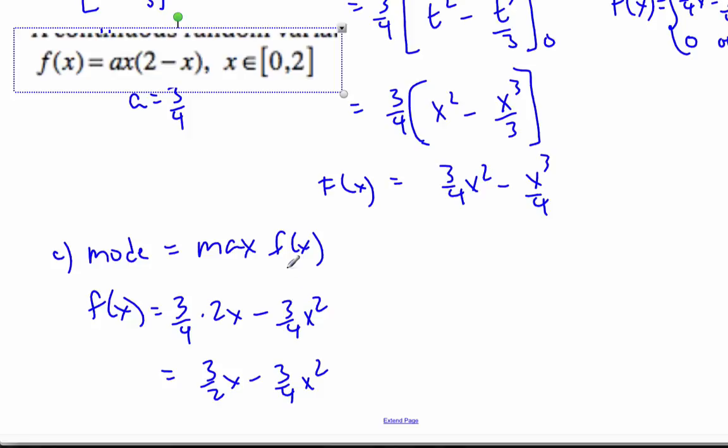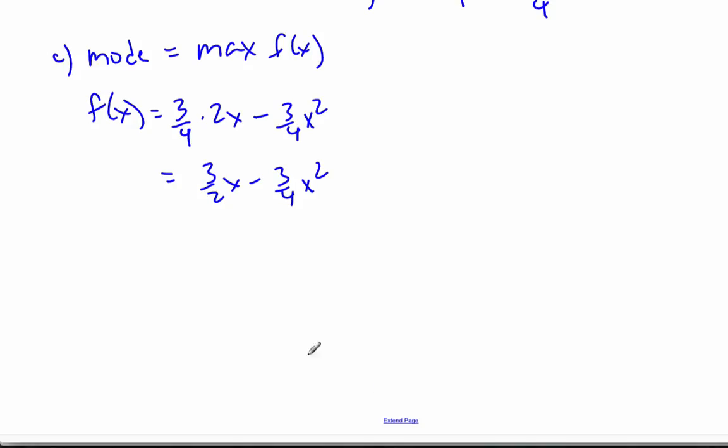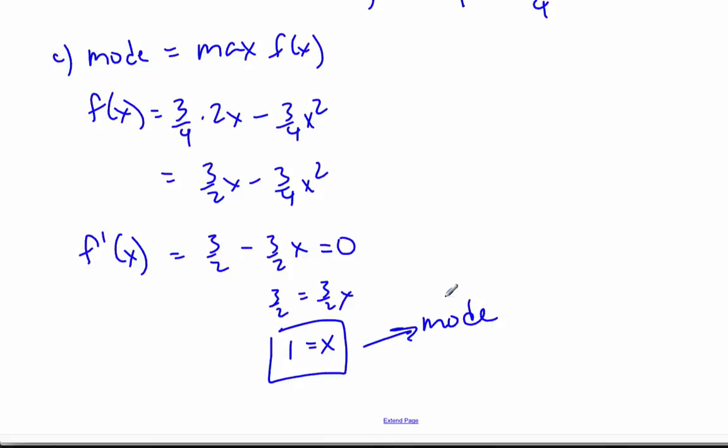Taking that, I wish to take the derivative. I'm going to find the derivative of this. I'm looking for a maximum. So the derivative is 3 halves minus 3 halves X. Set it equal to 0 for maximums. And when I do that, I get 3 halves is equal to 3 halves X. And so X is equal to 1. And so 1 is the mode of this particular random variable X.